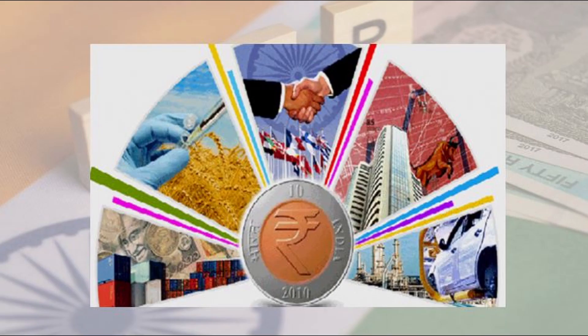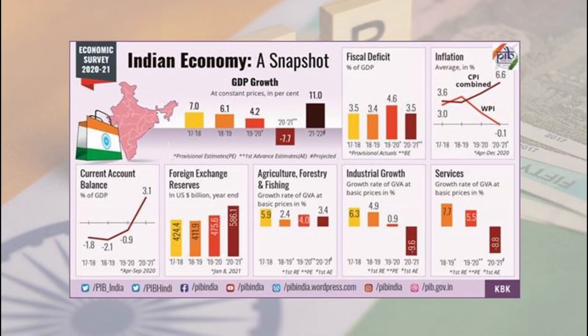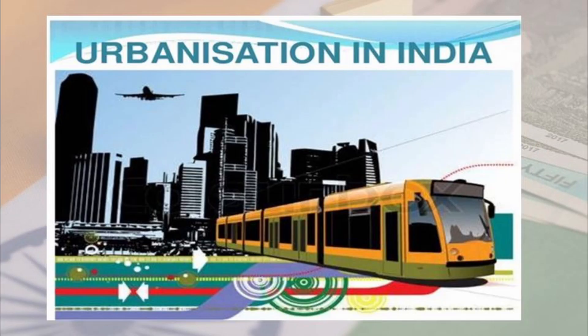Putting it all together: the absolute growth in real GDP over FY20 would be a marginal 1.3 percent. Nominal GDP is estimated to grow at 17.6 percent compared to a fall of 3 percent in FY21, meaning the government will benefit from a higher denominator as the annual fiscal deficit is assessed relative to nominal GDP. Manufacturing is likely to expand at 12.5 percent while construction may rise to 10.7 percent.